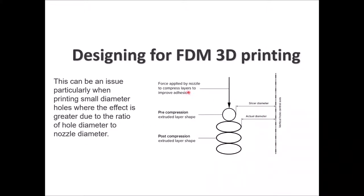This compression is done to improve adhesion between layers so they will not peel off, but it increases the width of the extruded segment and decreases the diameter of the hole. As shown on the right, this is the force applied by the nozzle to compress layers — before compression they are circular, after compression the diameter becomes wider in an oval shape. This affects the wall of your hole — it will be smaller than designed. This issue is especially significant for small diameter holes, where the effect is greater due to the ratio of hole diameter to nozzle diameter.